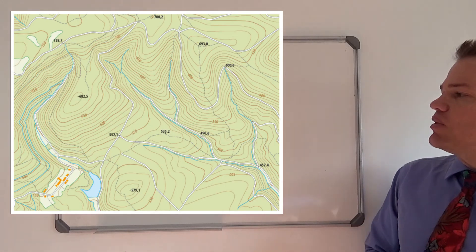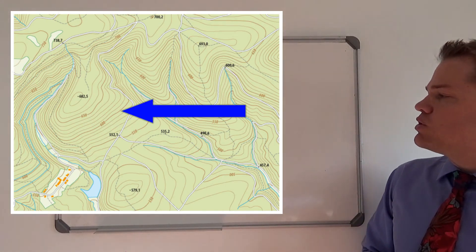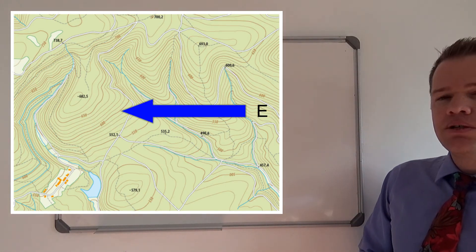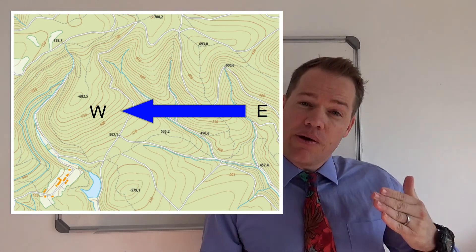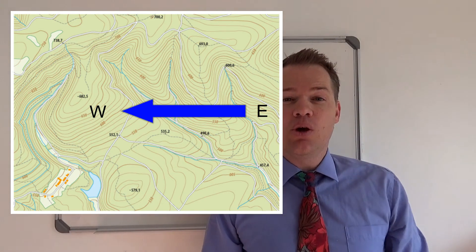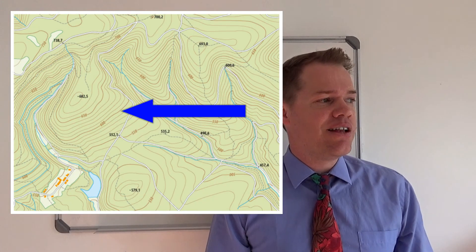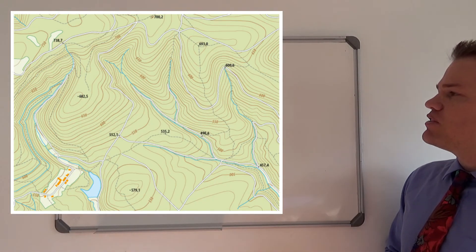Now we can look at another example. This wind here comes from the east. So if it blows from east to west, it's going towards the west. But we call it an east wind or an easterly wind.